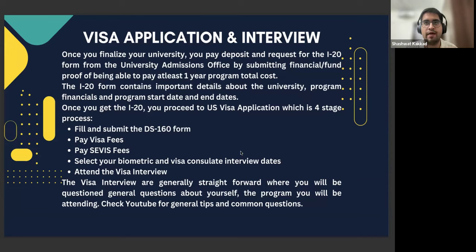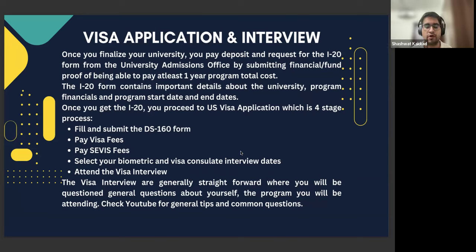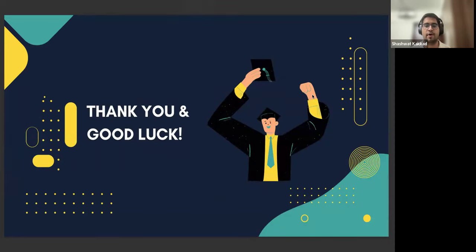They generally keep a good amount of slots in June, July, and even August if your program starts in September. You then finally attend the visa interview, which is generally straightforward. It's mainly generic questions: what was your undergrad, what was your CGPA, why are you interested in going to this university, and what is your funding proof. It generally takes only one to two minutes. You can always go to YouTube for tips and common questions on what is generally asked. With that, thank you and good luck.